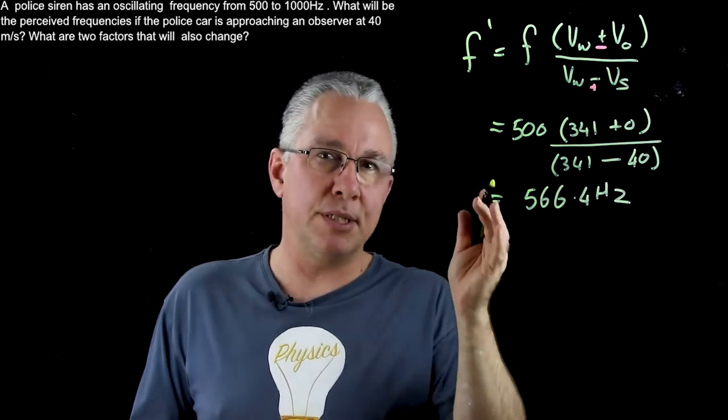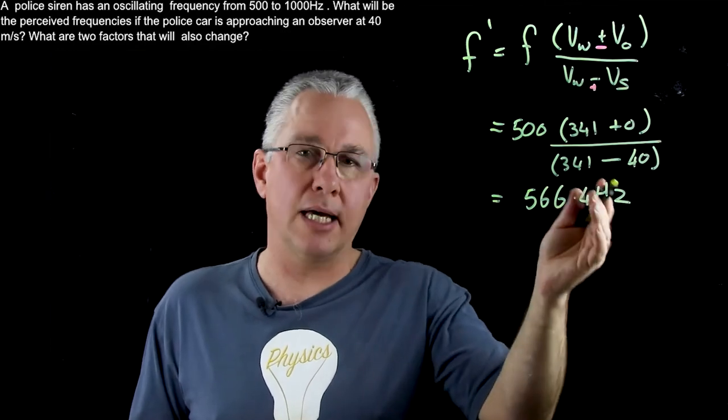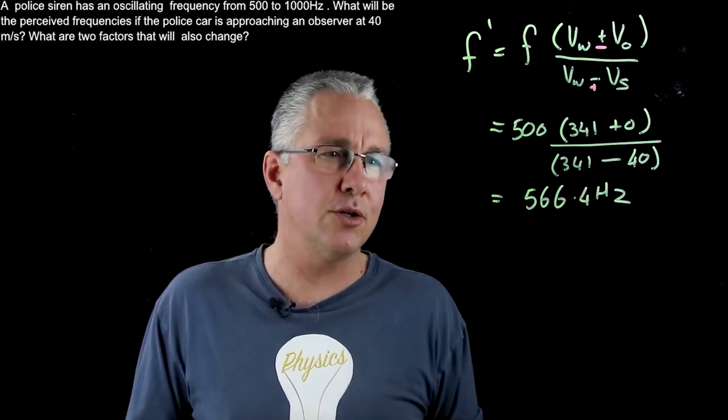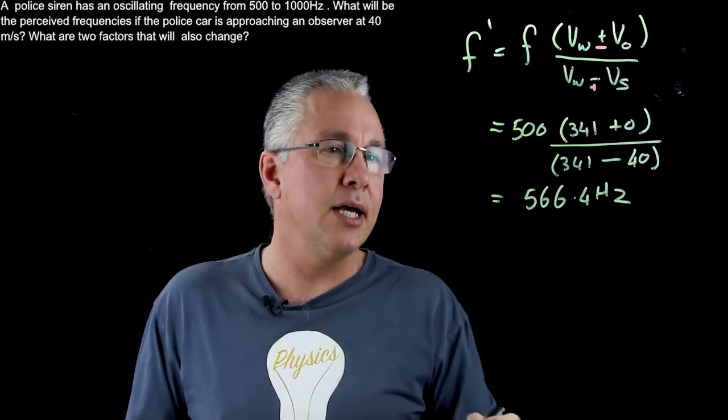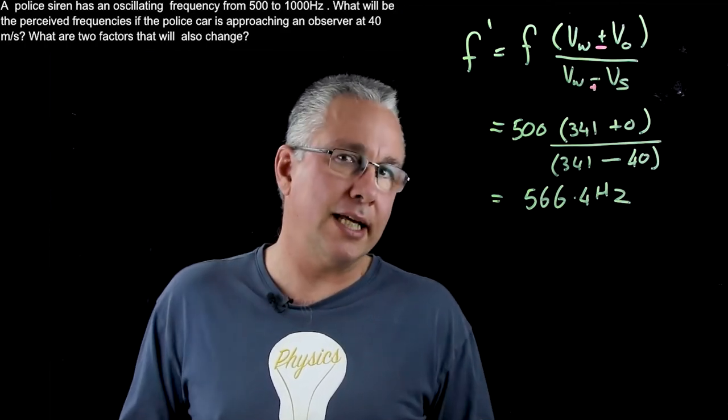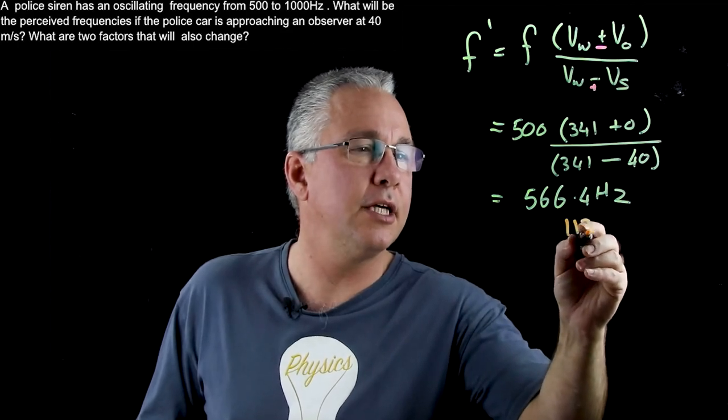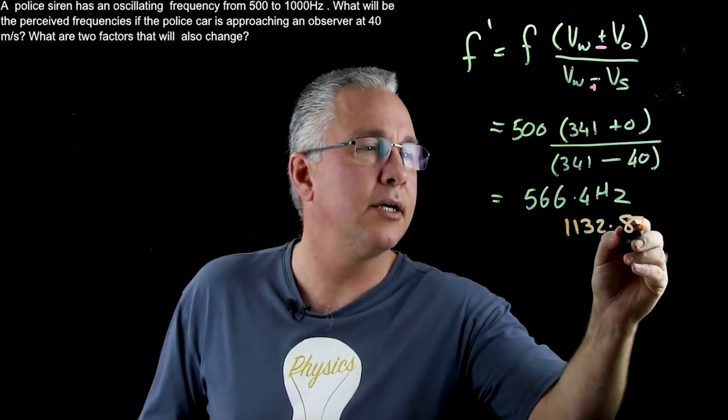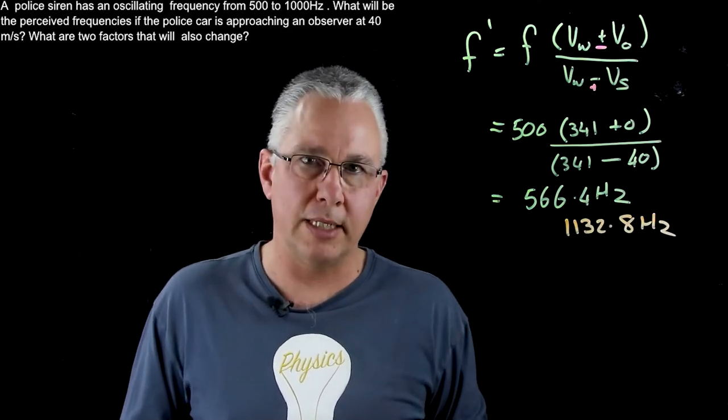And so that's the perceived frequency as the car approaches. Now what about the 1000 Hz? Well since this is twice that amount the other one is going to be twice that amount as well. And you're going to get a value of 1132.8 Hz. So that's just twice the amount.